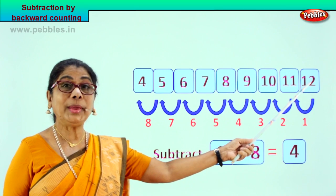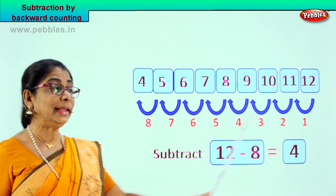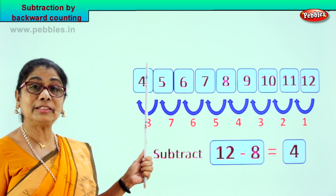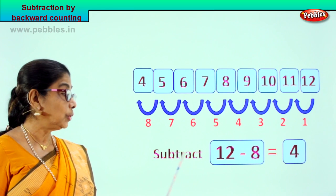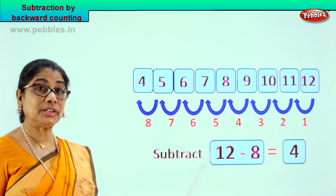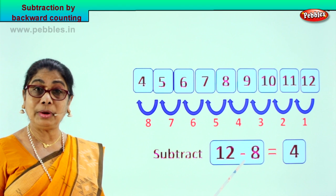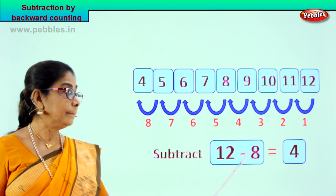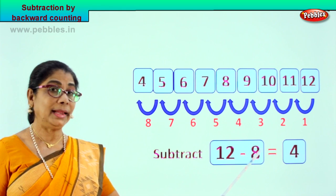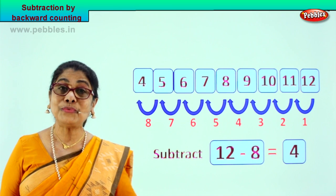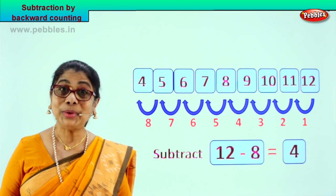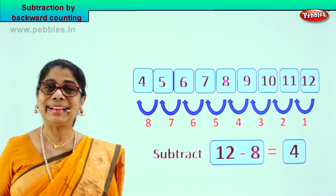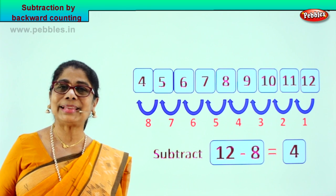Number 12, we counted 8 steps backward and you get the answer 4. So in subtraction counting backward method, 12 minus 8 is equal to 4. Did you enjoy doing it? Good. Shall we go to another exercise?